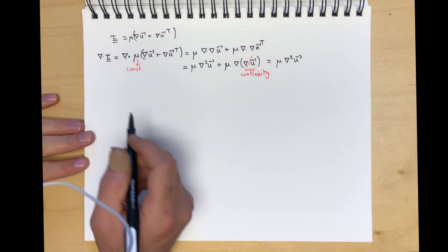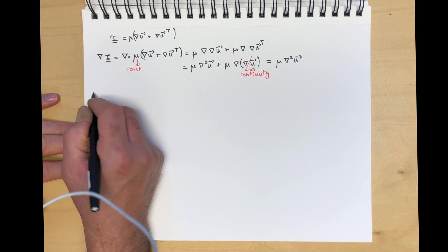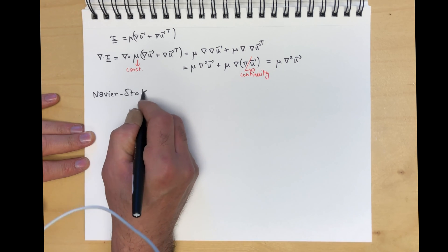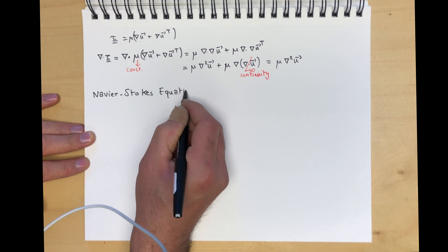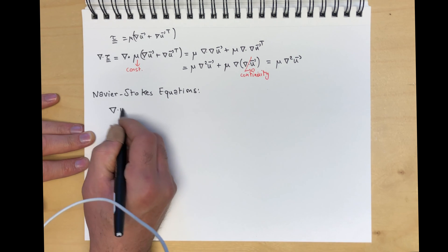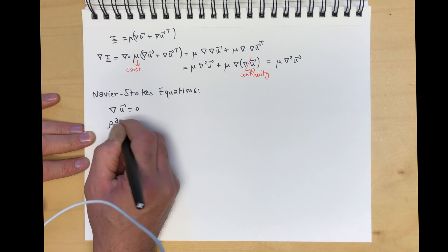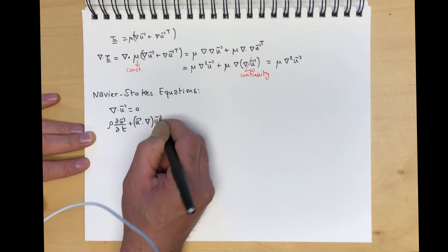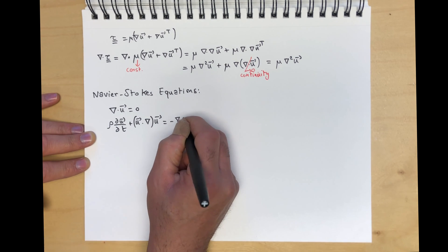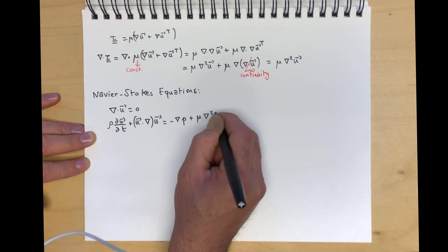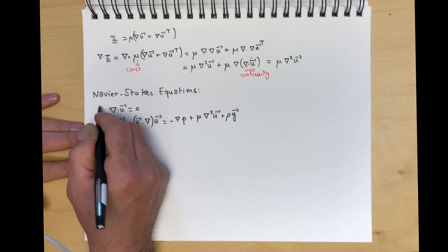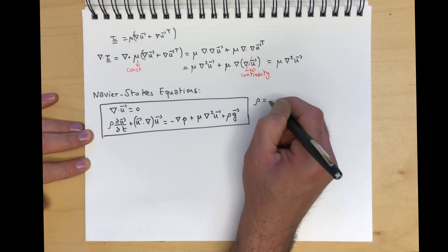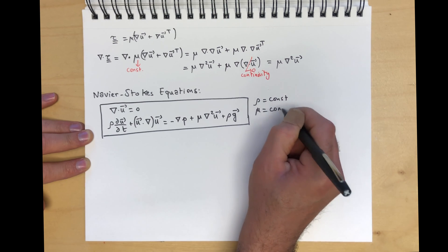Finally, we can write the Navier-Stokes equations — named after Claude Navier and George Stokes. We have: div u = 0, and rho(du/dt + u·grad u) = -grad p + mu del² u + rho g. These are the Navier-Stokes equations for flow where rho is constant and mu is constant.